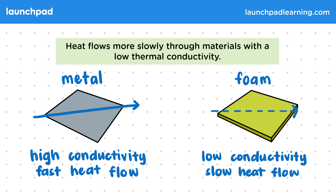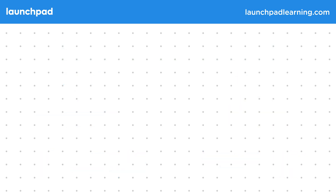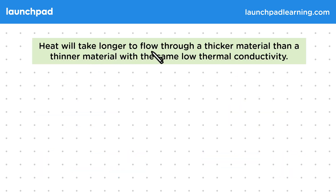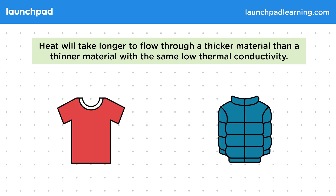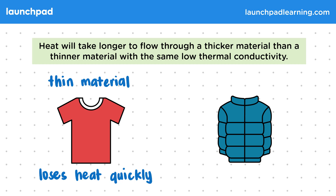Is there a way we can increase the amount of insulation even further? Heat will take longer to flow through a thicker material than a thinner material with the same low thermal conductivity, simply because the heat has more to travel through to escape. For example, a t-shirt has a relatively thin material, so heat can escape through it very quickly. This is really useful on a hot day when we want the heat to escape the body quickly.